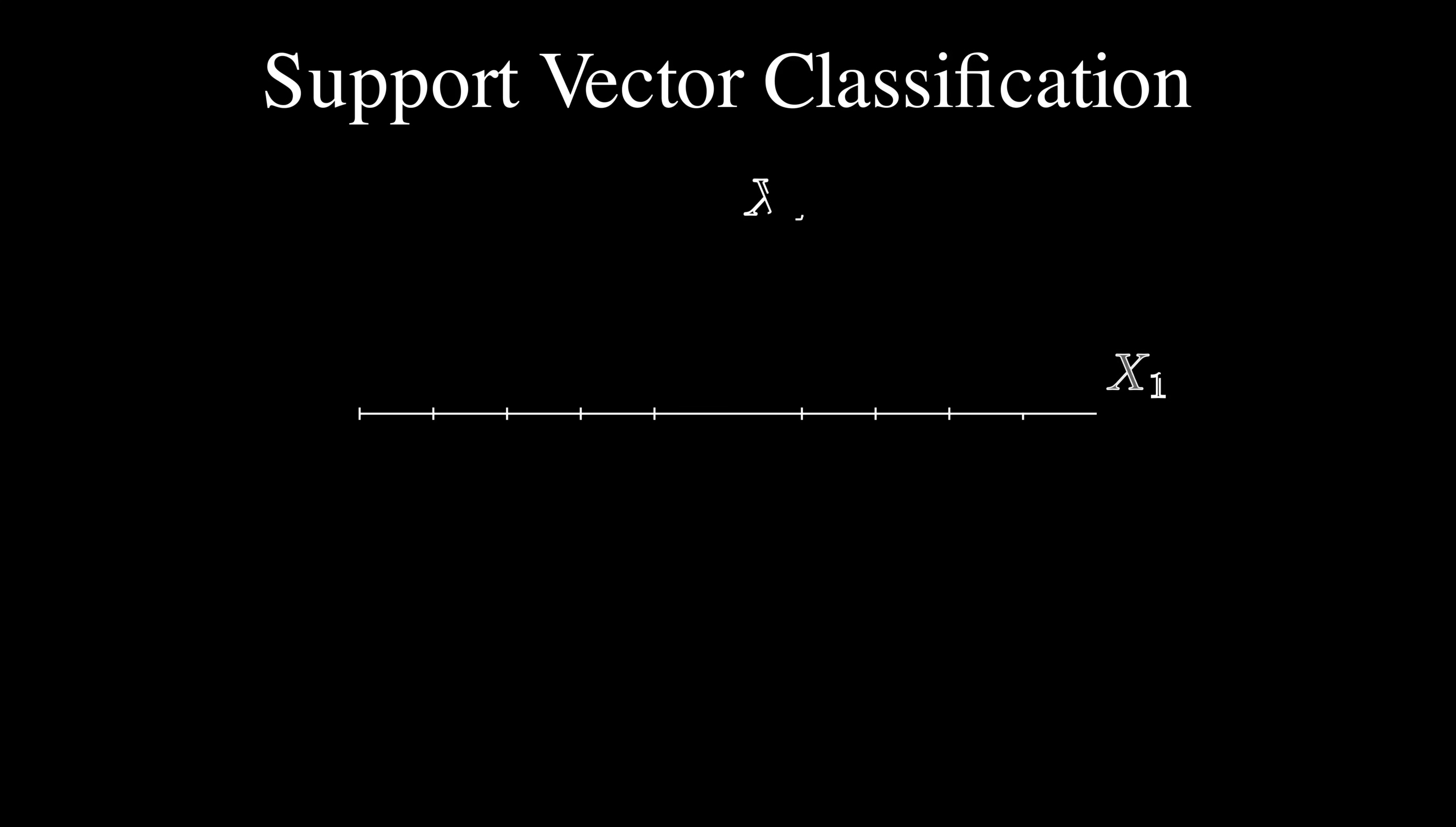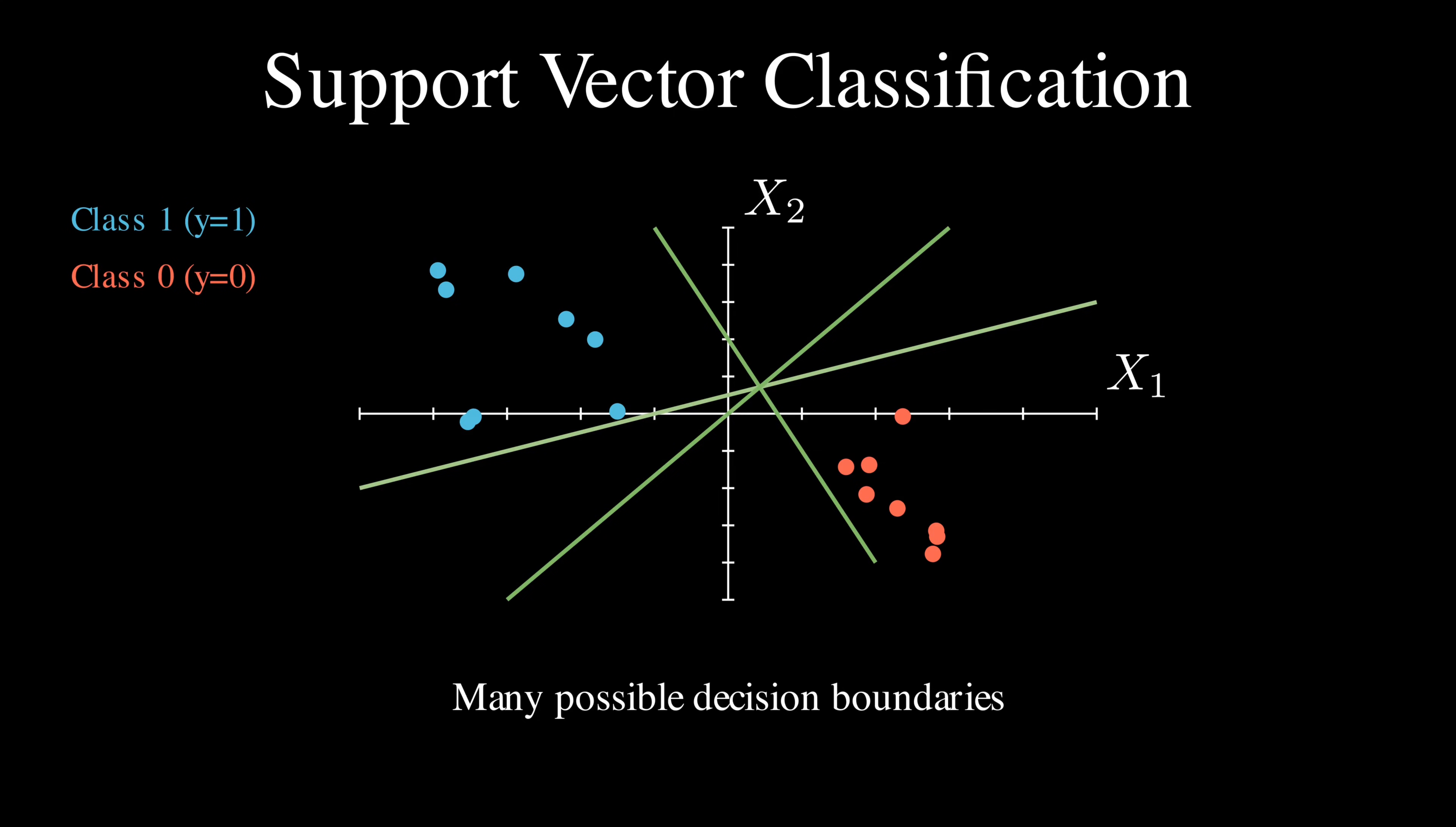Let's start with a recap of support vector classification. Imagine we have some data points in a 2D space where we have blue points for class 1 and red points from class 0. In support vector classification, we are trying to find the decision boundary, a line in this case, that separates these two classes.